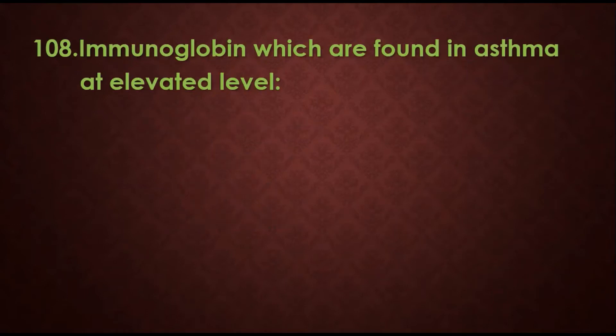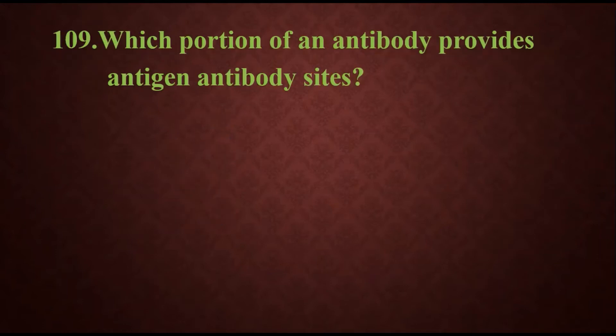Question 108: Immunoglobulin which are found in asthma at elevated levels. Options are IgA, IgE, IgM, or IgD. Obviously, asthma elevated means immunoglobulin E.